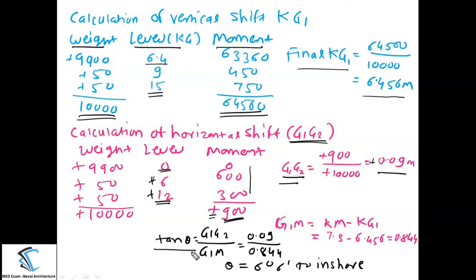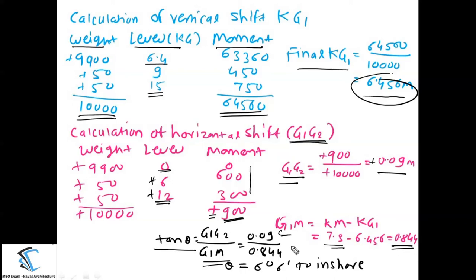The angle of list formula: tan θ = G1G2 / G1M. G1M = KM − KG1 = 7.3 − 6.456 = 0.844 meters. Substituting G1G2 = 0.09 and G1M = 0.844, theta = 6 degrees 6 minutes to the inshore side. I hope all three numericals are clear. These are very important exam problems covering all different types of angle of list calculations. Thank you very much for listening. Please stay tuned with my YouTube channel, MEO Naval Architecture.